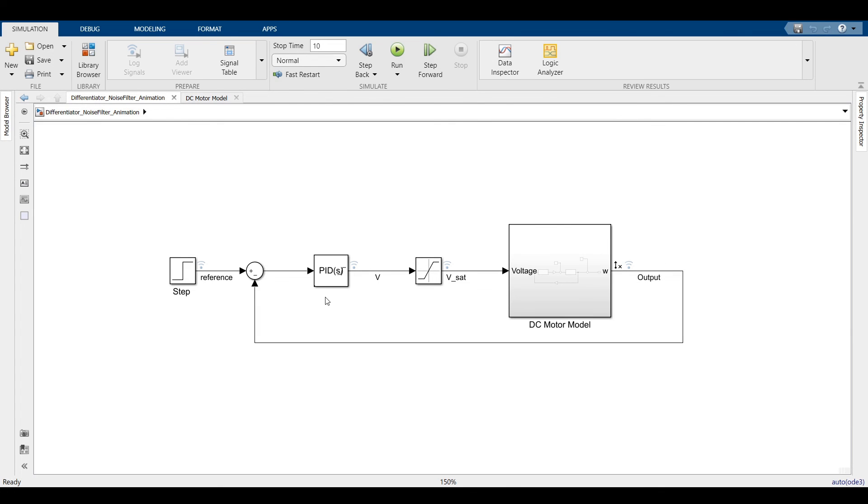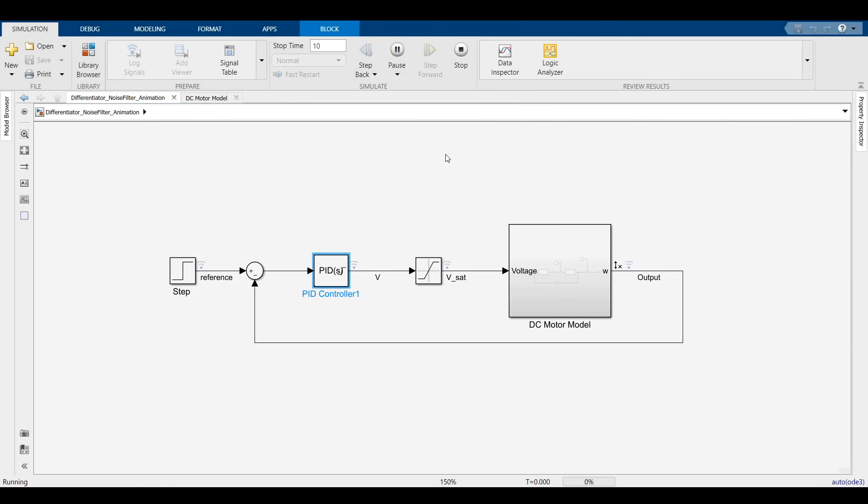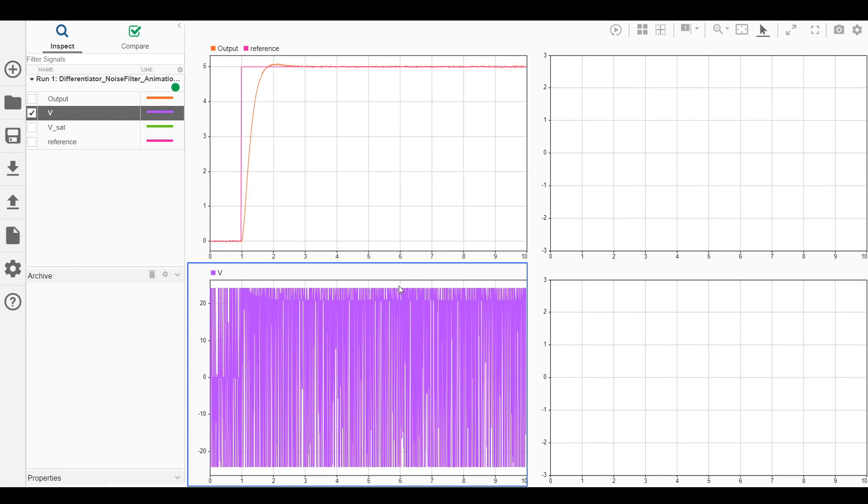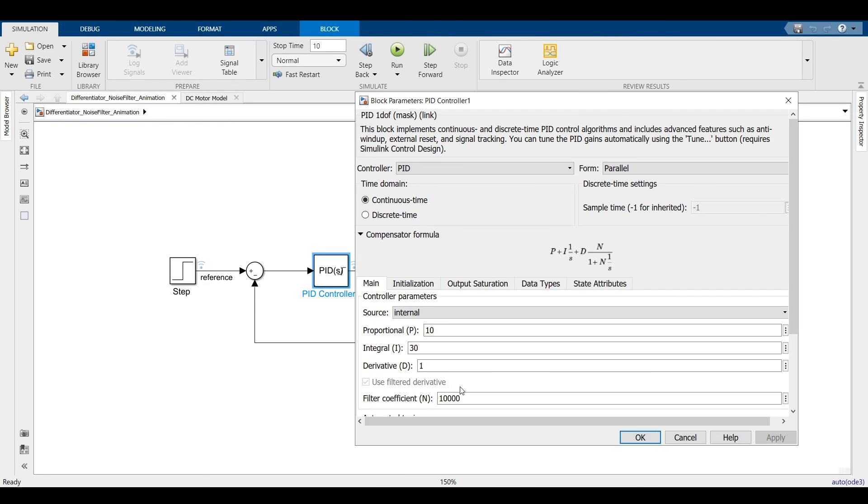Let us check out the simulation. The PID block in Simulink already has the low pass filter added to the differentiator and the value of n determines the cutoff frequency. Let us keep the cutoff frequency to 10,000 radians per second and run the simulation. The speed follows the reference well. But just see the actuator input. It was oscillating from 0 to 24V and this is not a stable controller at all.